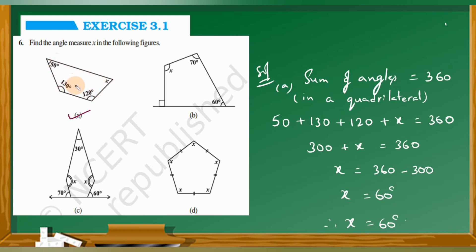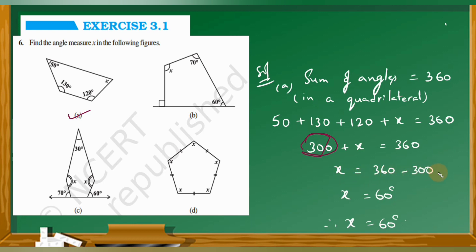So sum of measures of all the angles: 50 plus 130 plus 120 plus x is equal to 360 degrees. So 50 plus 130 plus 120 is 300, and x is equal to 360 minus 300. Therefore x is equal to 60 degrees.